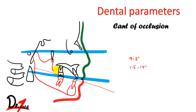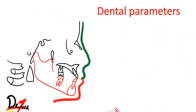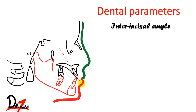Next is the inter-incisal angle. This angle is formed between the long axis of the upper and the lower incisors. We draw the long axis of the upper incisor and the long axis of the lower incisor, and they form an angle — that is the inter-incisal angle. The average is 135.4 degrees and the range is from 130 to 150.5 degrees.